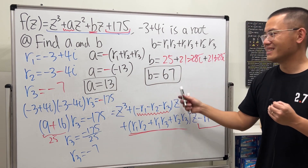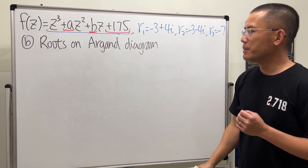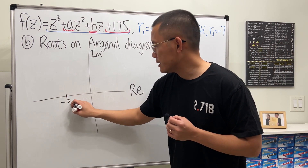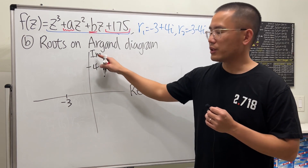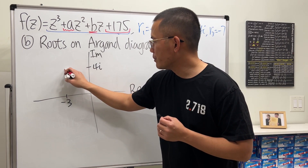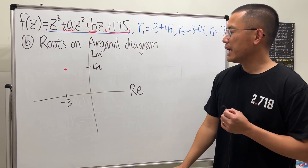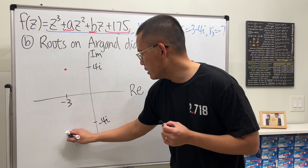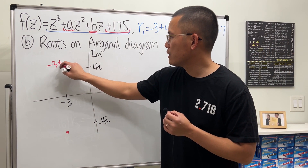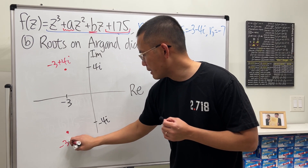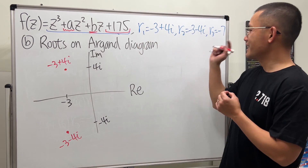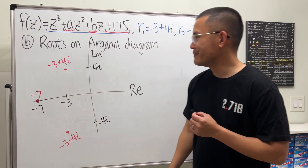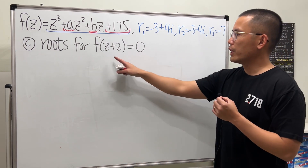For part 2, we plot all the roots on an Argand diagram. First, negative 3 plus 4i: real part negative 3, imaginary part 4i — plot that point. Then negative 3 minus 4i goes at negative 4i, plotted symmetrically below. Finally, negative 7 is a real root, plotted on the real axis.